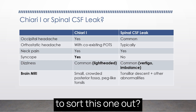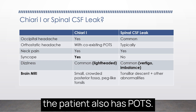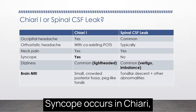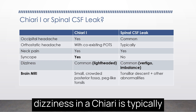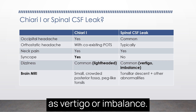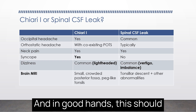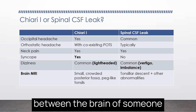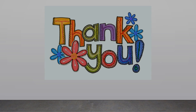How are we going to sort this one out? Occipital headache and neck pain are common to both. Orthostatic headache does not happen in Chiari unless the patient also has POTS. Syncope occurs in Chiari but not with a spinal fluid leak. Similarly to POTS, the dizziness in Chiari is typically lightheadedness, whereas a spinal fluid leak is described as vertigo or imbalance. The answer should really be on the MRI — in good hands, there are distinct differences between the brain of someone with a Chiari malformation and a spinal fluid leak.